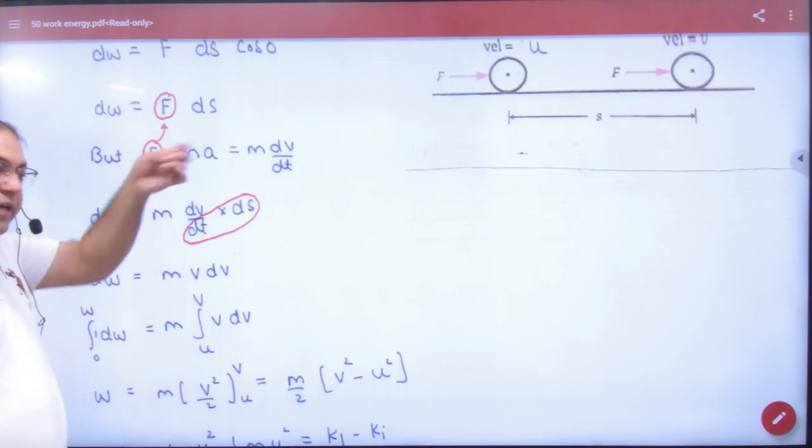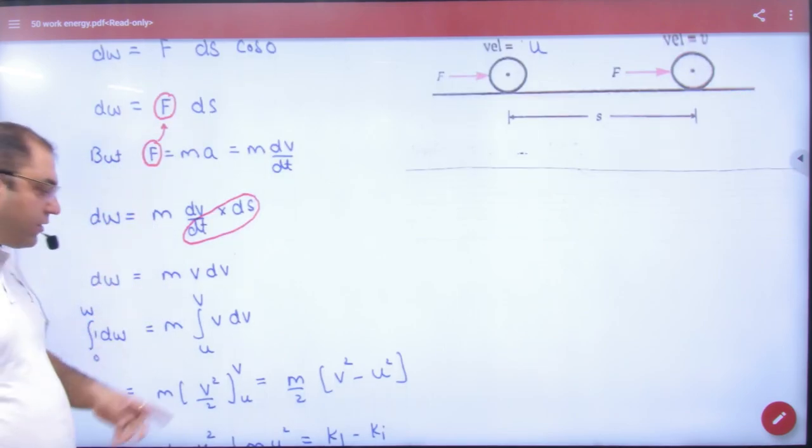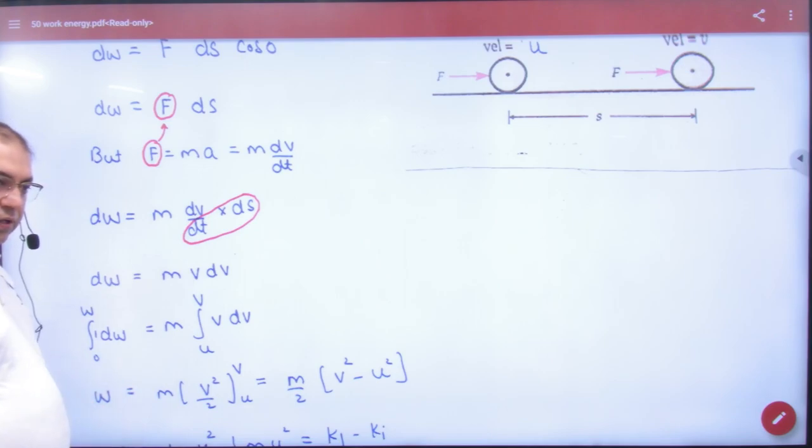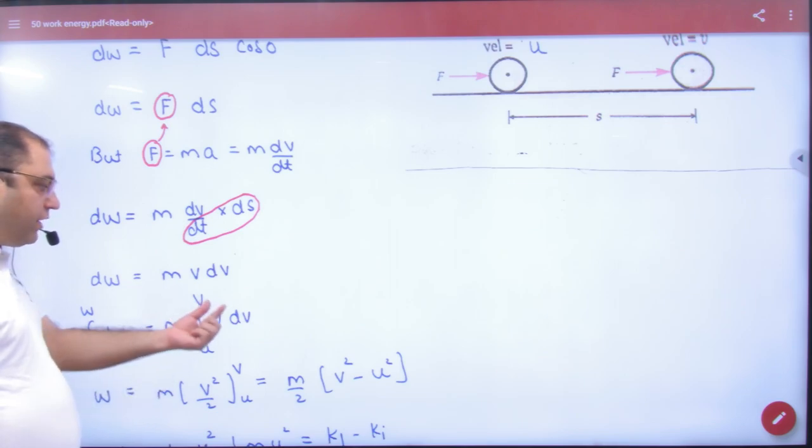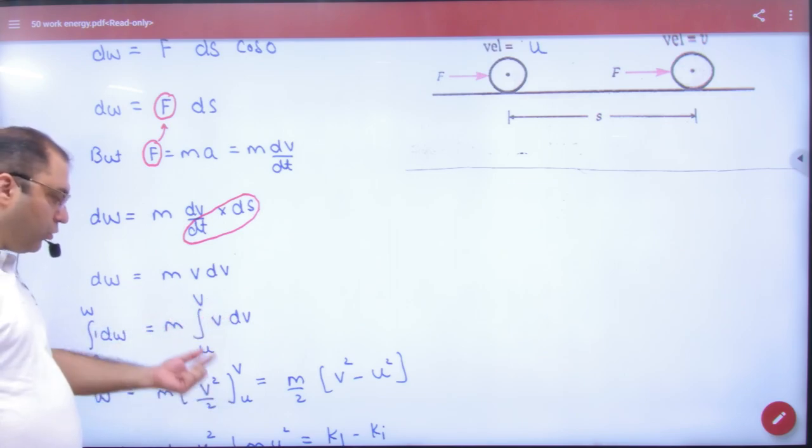In kinetic energy, the limit was 0 from V. What is it? U from V. 0 from W, U from V. So in this, W is equal to M, V of integration is V square by 2, U from V.